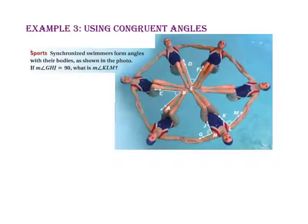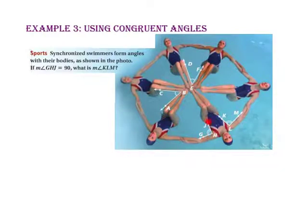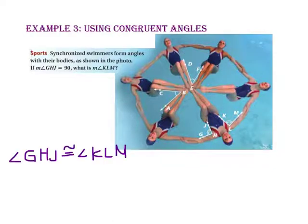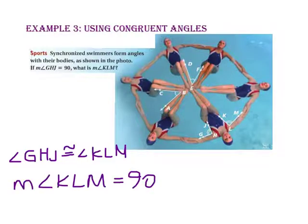Example 3: synchronized swimmers form angles with their bodies as shown in the photo. If the measure of angle GHJ equals 90 degrees, what is the measure of angle KLM? Angle GHJ has two arcs, and angle KLM also has two arcs, which means these two angles are congruent. Since angle GHJ has a measure of 90 degrees, angle KLM has the exact same measure — so the measure of angle KLM is 90.